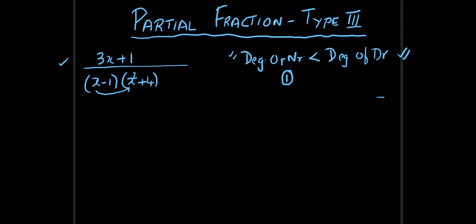Now in Type 1, the denominator was a product of simple factors, that means the power used to be 1. And in Type 2, we saw factors having power more than 1, maybe whole cube, maybe whole power 4, etc. Now in Type 3, the denominator contains quadratic factors.